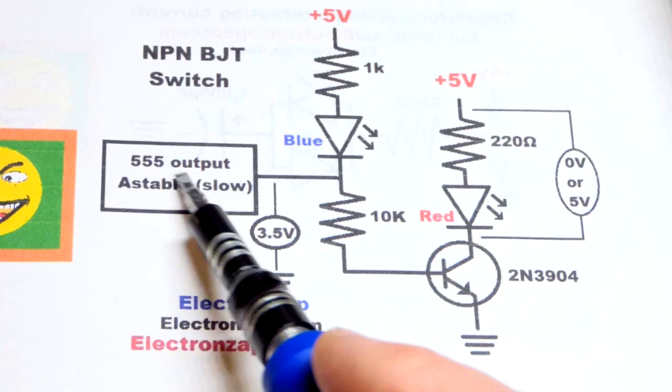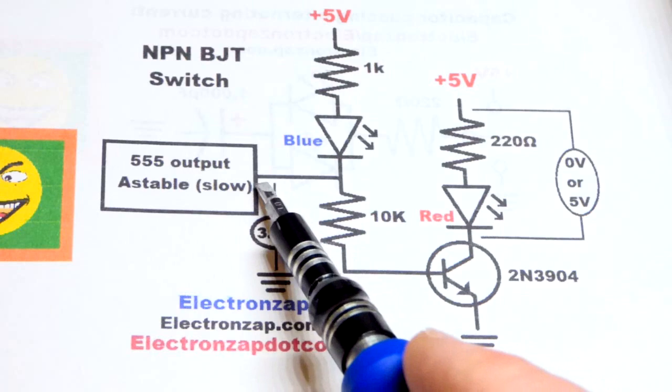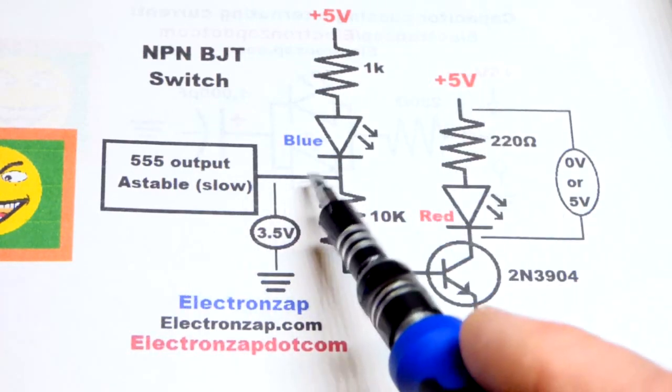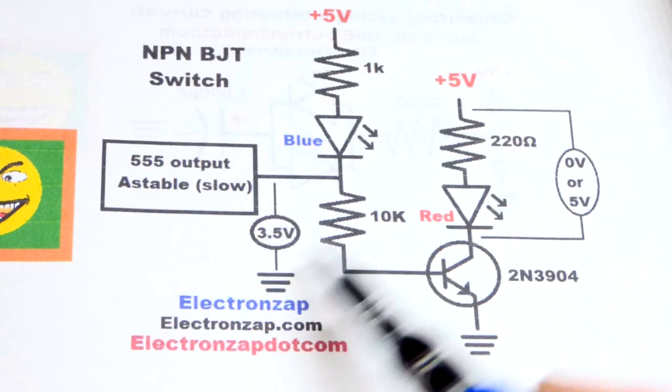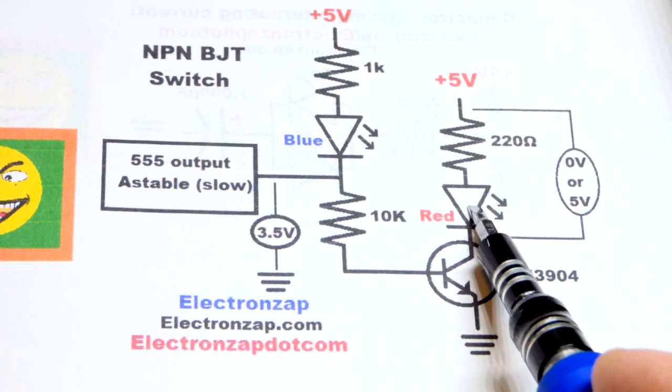When we did the 555 timer videos when the output was high we had the resistor and LED going directly from there to ground and it lit up okay. It was perfectly fine.